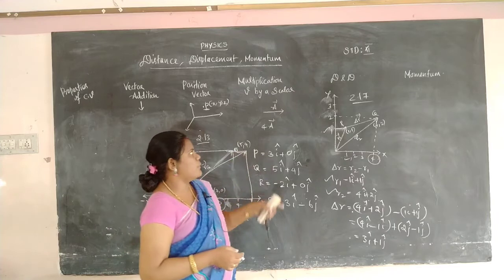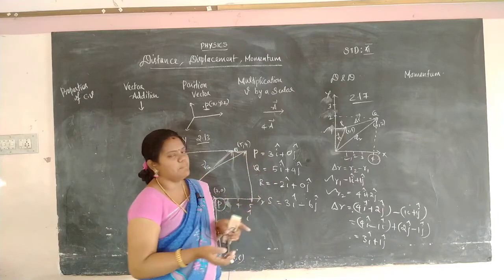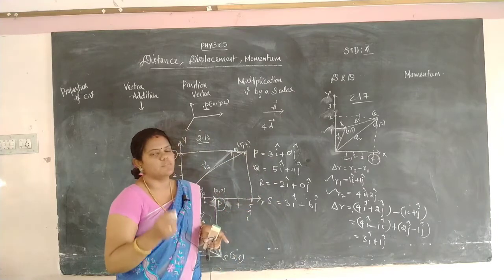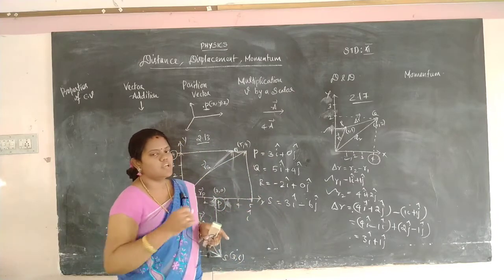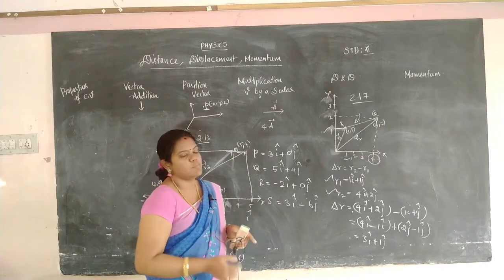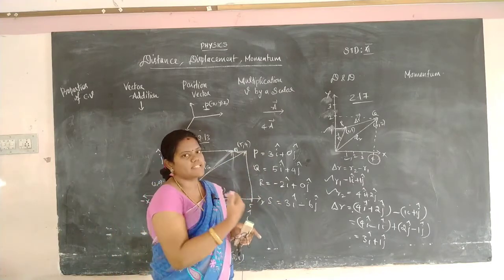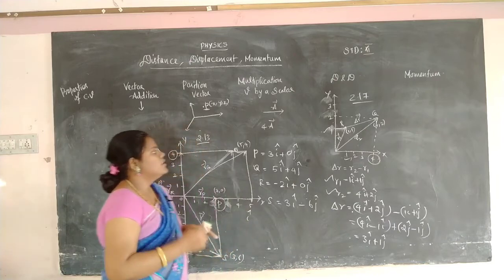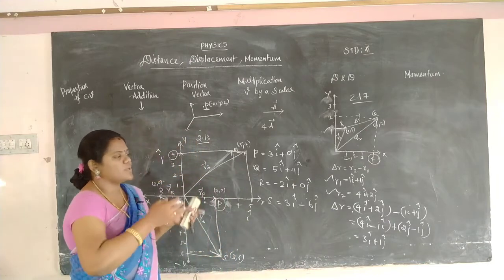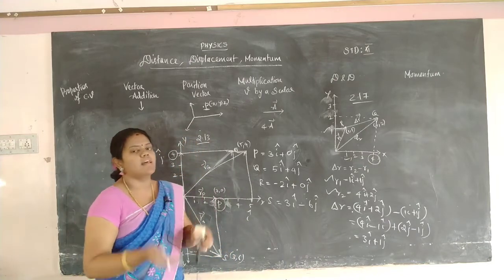This is the way we easily mention the displacement vector in the coordinate system — from motion along one axis and the other.